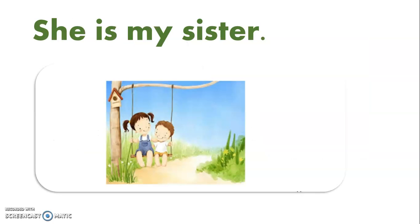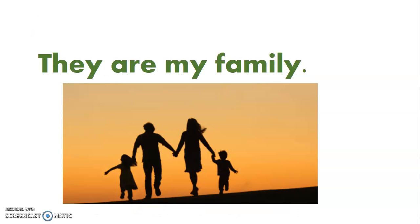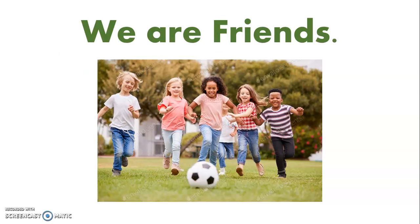We have the singular form of the third person: she is my sister. We have these kids here, so the girls say: he is our classmate. Another example: they are my family, we are friends.